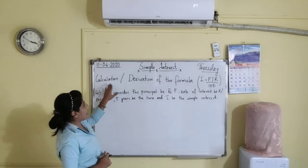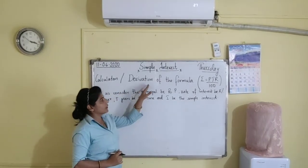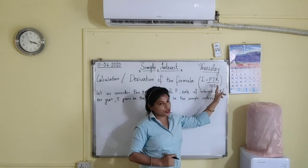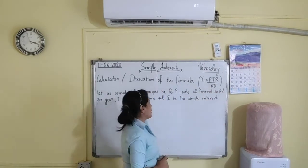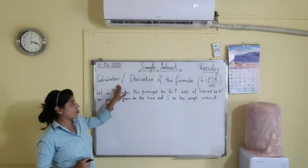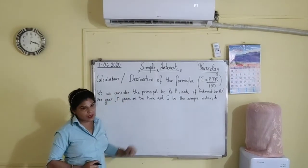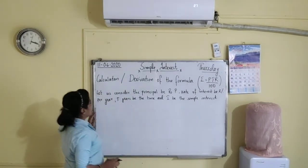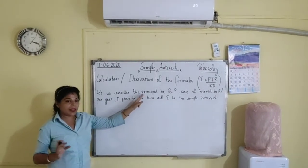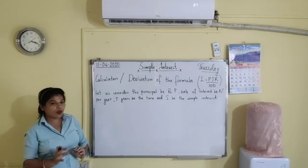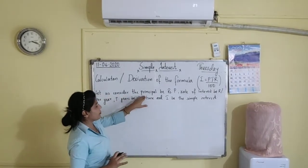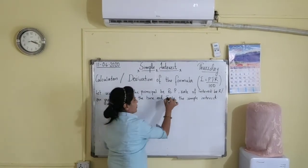Now we will continue with the calculation or derivation of the formula for simple interest, that is I is equal to PTR upon 100. Here we will derive the formula on the basis of the unitary method. So let us consider the principle P — the amount we are depositing or borrowing.